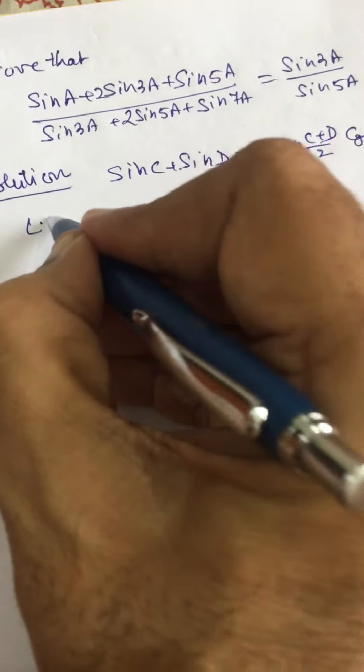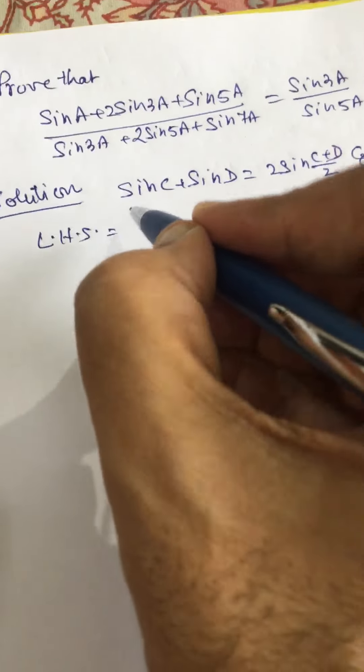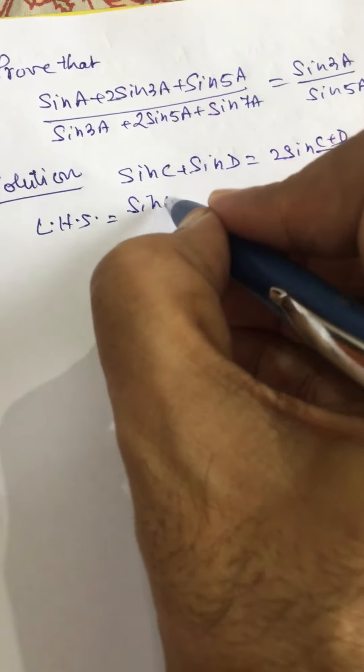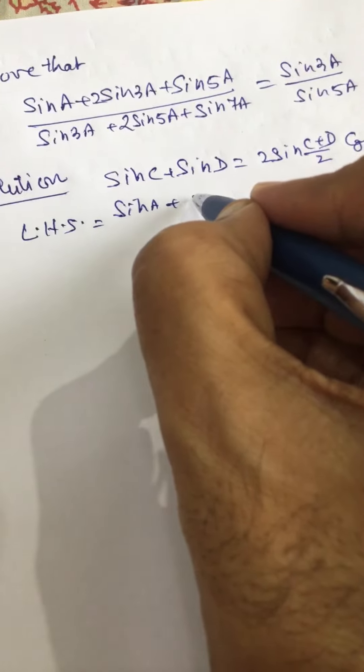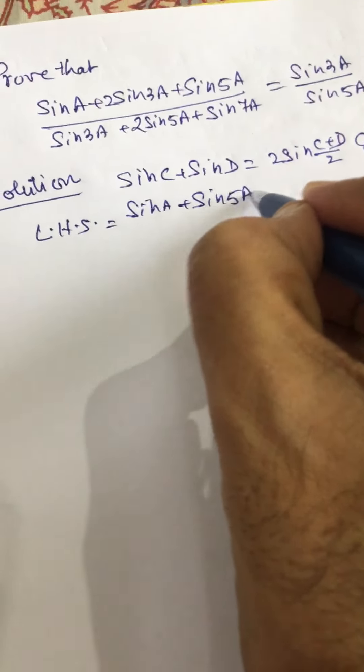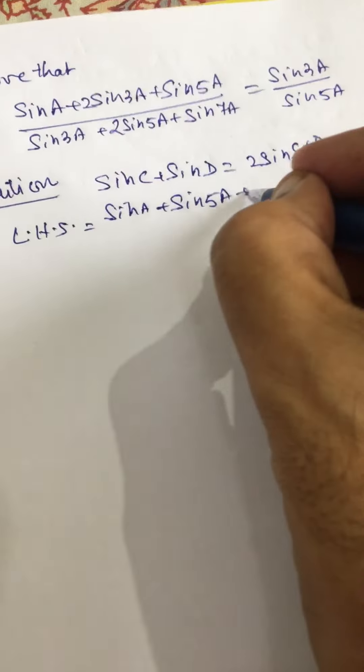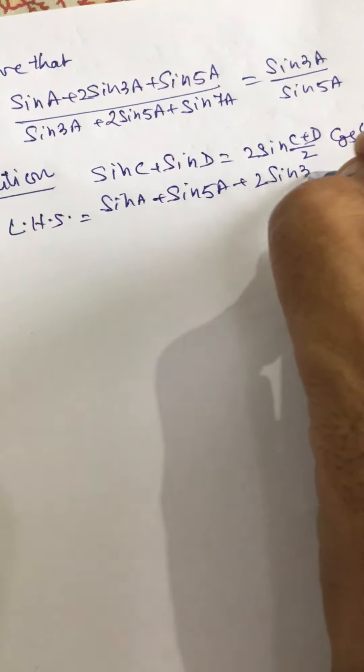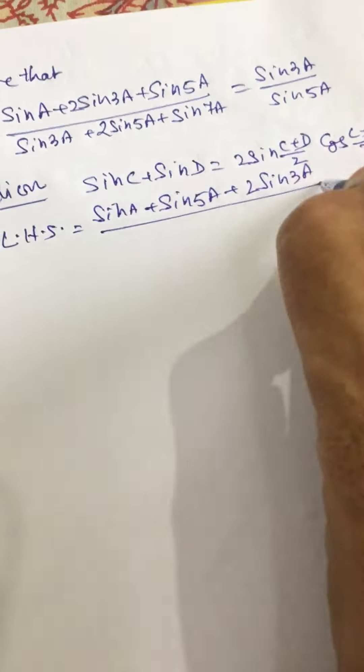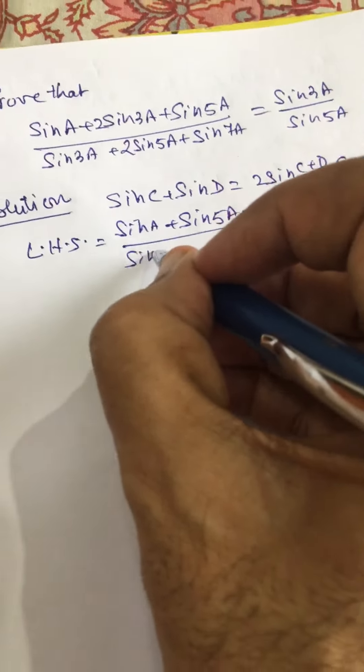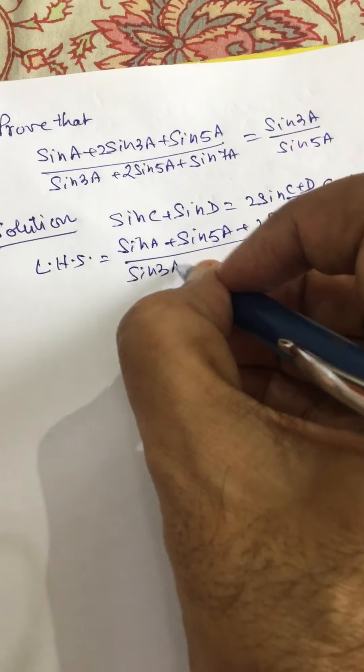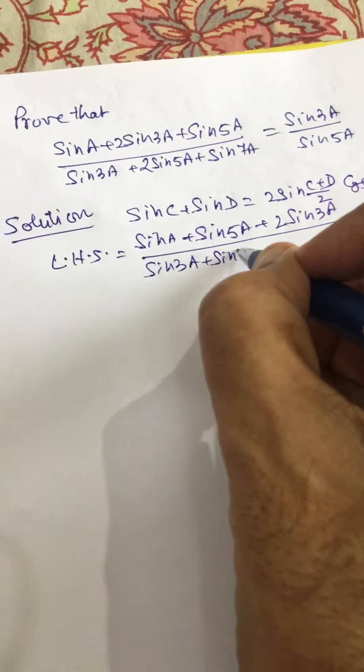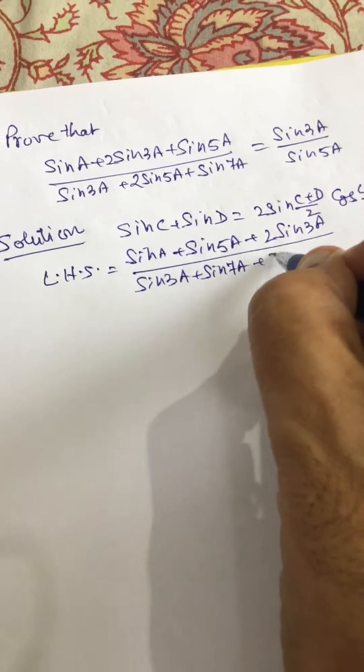Now we can write the left hand side as sin A plus, writing these two terms together, sin 3A plus sin 5A, plus 2 sin 3A in the numerator, divided by sin 3A plus sin 5A plus sin 7A, plus 2 sin 5A in the denominator.